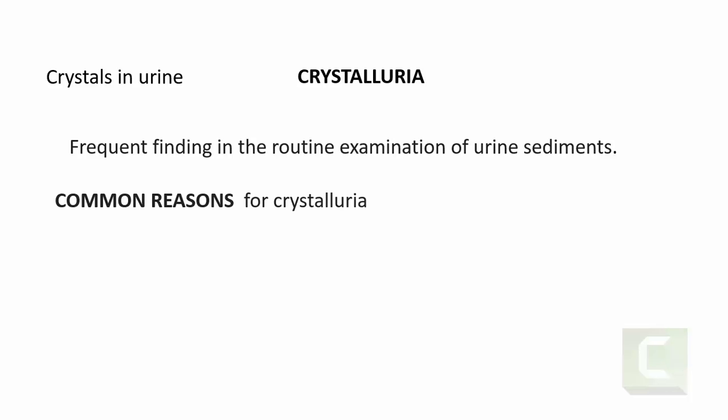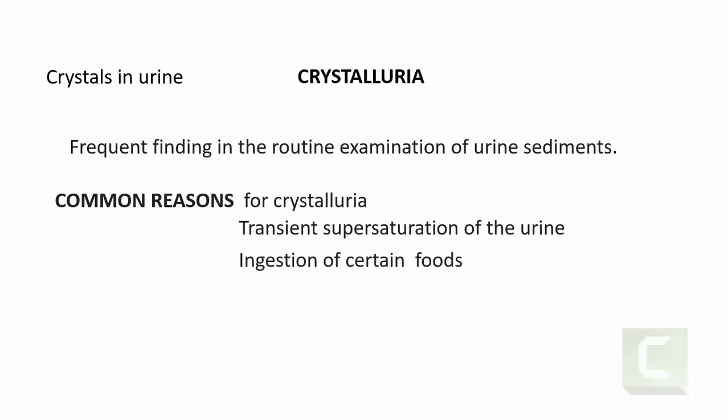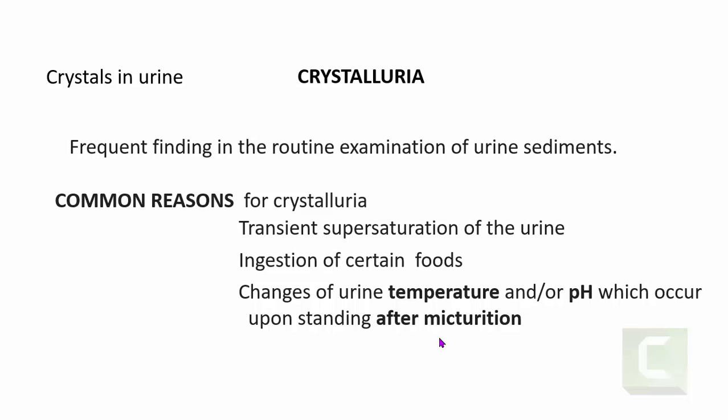What are the common reasons for crystalluria? Is finding a crystal always pathological? No, absolutely not. Crystals can be seen whenever there is transient supersaturation of the urine. It can be seen with ingestion of certain foods rich in oxalates, or due to ingestion of drugs like ascorbic acid. Most importantly, it is because of changes in urine temperature and/or pH which occur upon standing after collection of the sample.